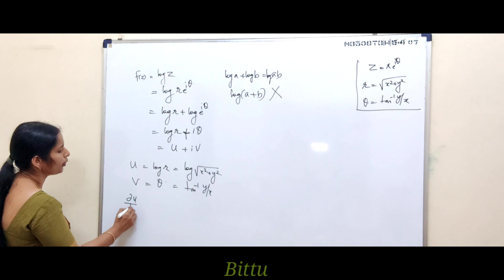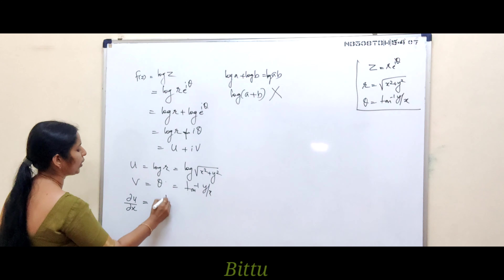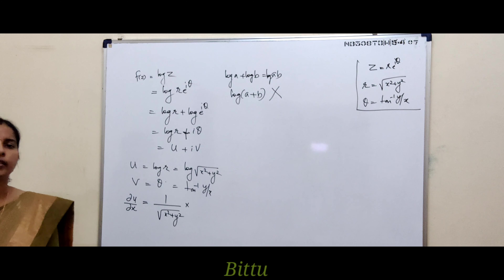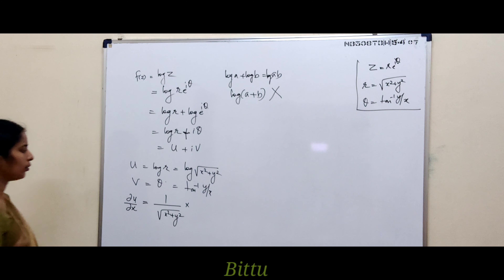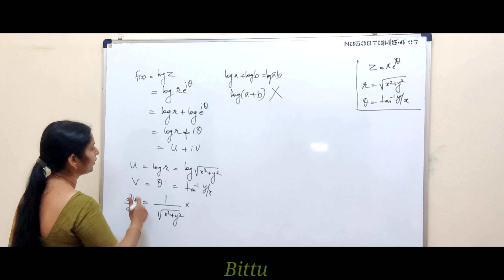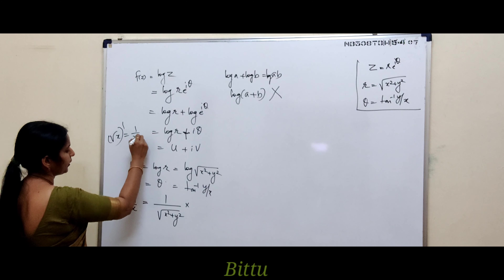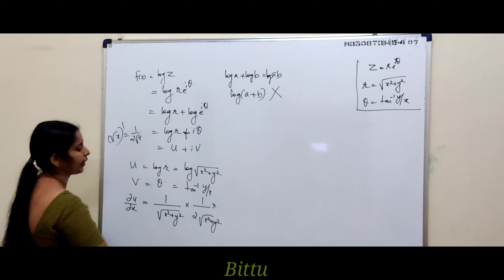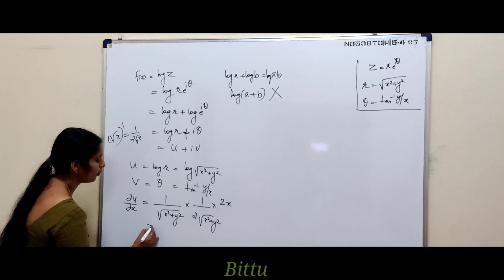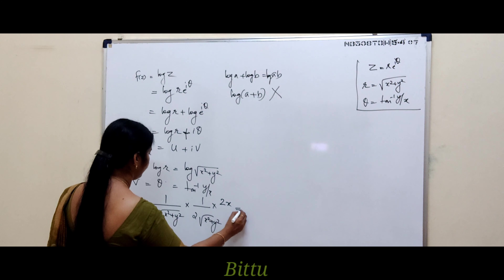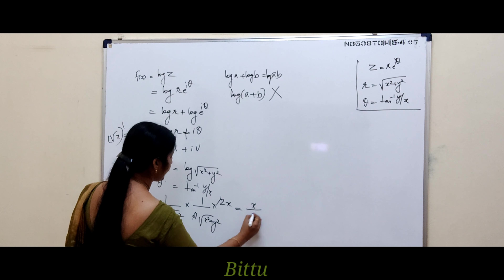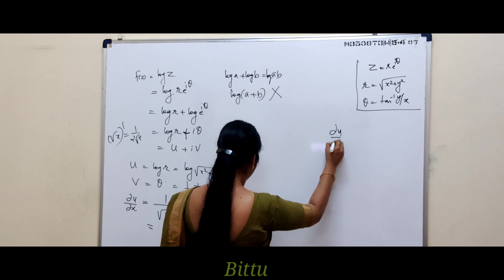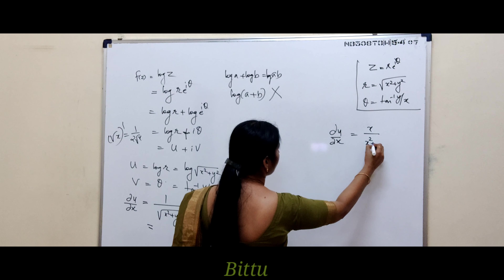Differentiating u = log√(x² + y²) with respect to x using the chain rule: ∂u/∂x = [1/√(x² + y²)] · [1/(2√(x² + y²))] · 2x = x/(x² + y²). So ∂u/∂x = x/(x² + y²).